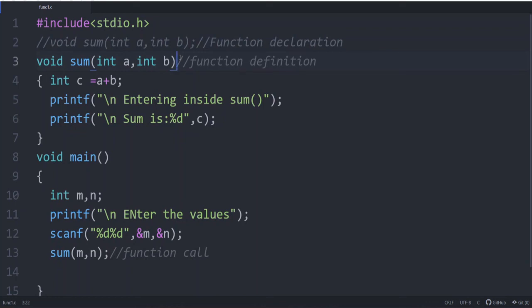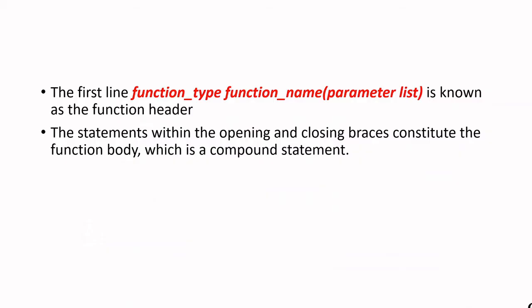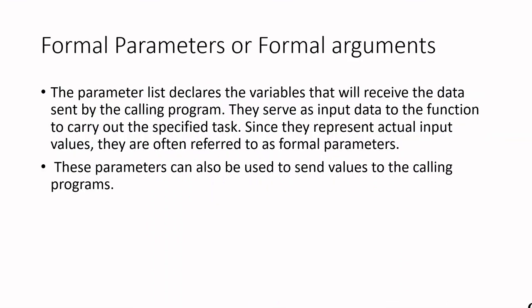The syntax of the function header or function prototype is: function type (return type — void, int, float, etc.), then function name which is an identifier, followed by a parameter list specifying which values are given as input to the function. The number and type of arguments are clearly specified in the function header. The statements within the opening and closing braces constitute the function body. The parameter list declares variables that receive data sent by the calling program — they serve as input and are referred to as formal parameters.